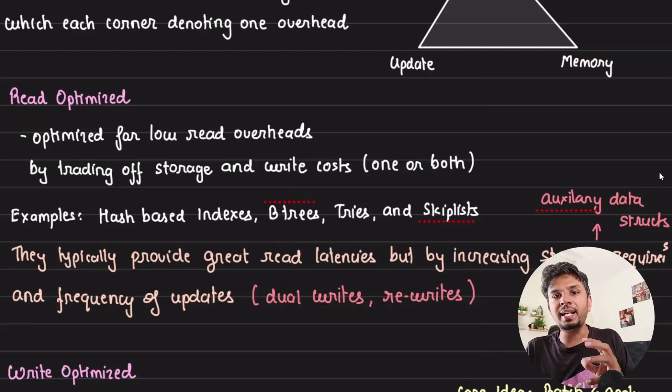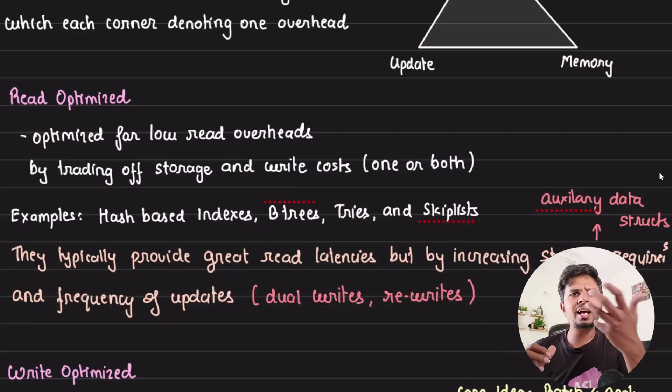They provide logarithmic read when you're reading by a primary key or doing an index lookup. We're taking up additional nodes, the intermediate nodes, requiring auxiliary data structures to manage it. The writes would be excessive because we're accessing multiple disk blocks. Similarly, tries and skip lists also fall into this category.